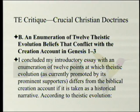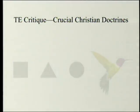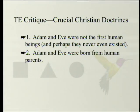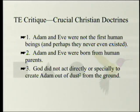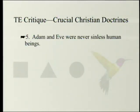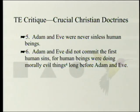Grudem concluded his introductory essay with an enumeration of 12 points at which theistic evolution, as currently promoted by its prominent supporters, differs from the biblical creation account if taken as historical narrative. According to theistic evolution: one, Adam and Eve were not the first human beings, and perhaps they never existed. Two, Adam and Eve were born from human parents. Three, God did not act directly or specially to create Adam out of the dust of the ground. Four, God did not directly create Eve from a rib taken from Adam's side. Five, Adam and Eve were never sinless human beings. Six, Adam and Eve did not commit the first human sins, for human beings were doing morally evil things long before Adam and Eve.